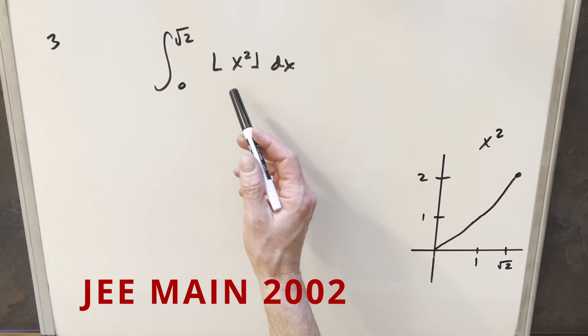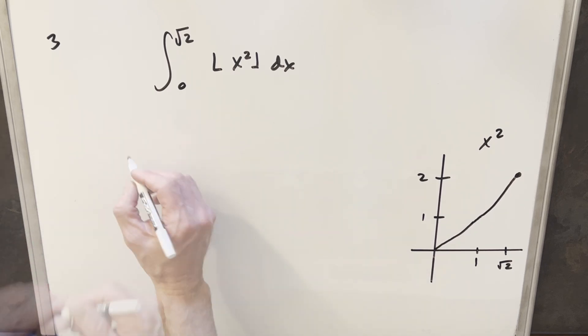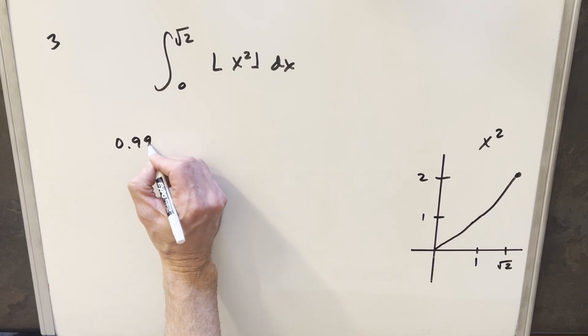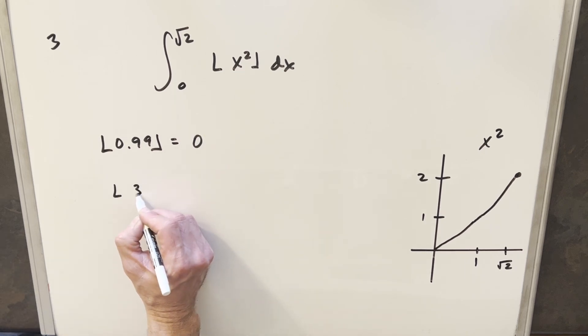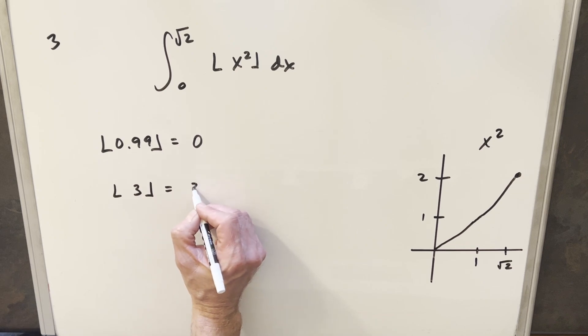Now just briefly on the floor function, what that will do is it'll round us down to the next highest integer. So for example, let's just say we needed to take the value of 0.99, the floor of 0.99, that's going to round us down to 0. But if we're taking the floor of some integer value like 3, that's just going to be 3.